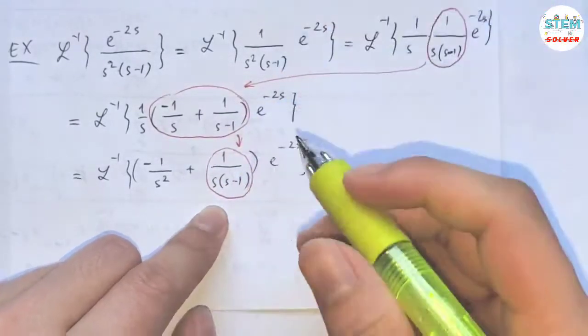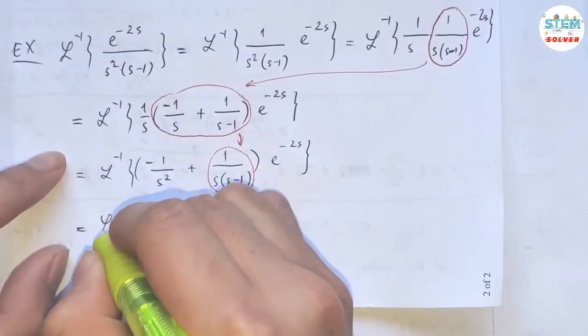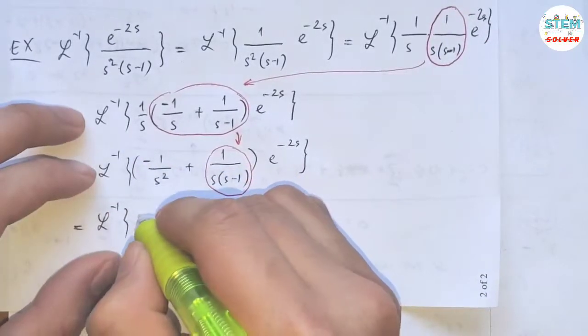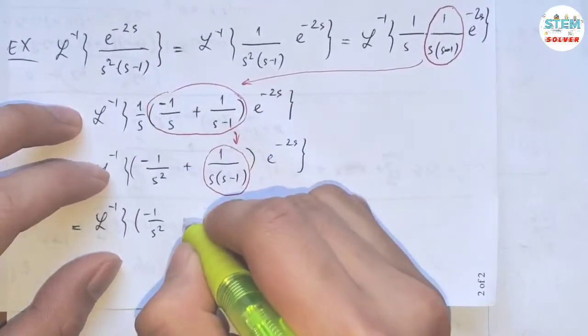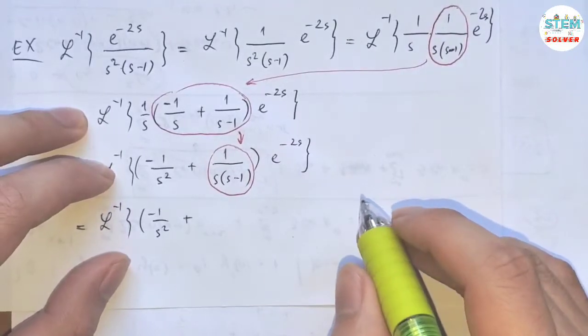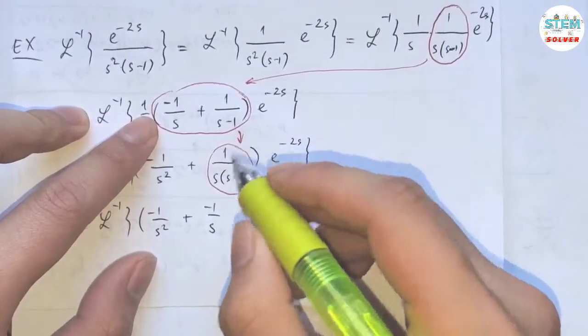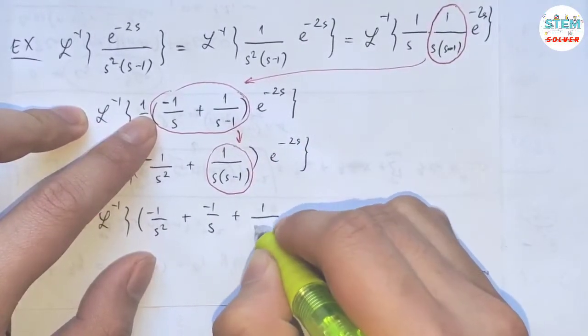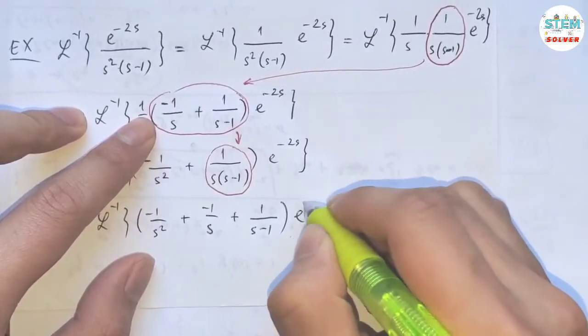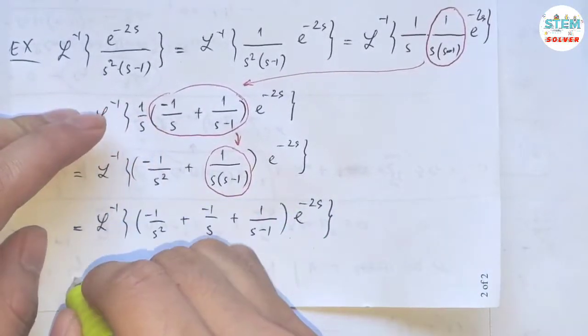Okay? So very quickly, you can find this partial fraction. Now let's see, I have negative 1 over s squared plus negative 1 over s plus 1 over s minus 1, all multiplied by e to the negative 2s. Okay?